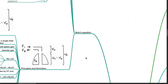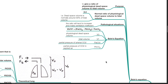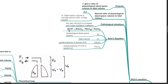The purpose of Bohr's equation is to give a ratio of physiological dead space volume to tidal volume. The normal ratio is 0.3, meaning dead space volume is normally around 30% of tidal volume. In pathological situations, this ratio tends to increase and makes ventilation inefficient. Bohr's equation is given by: Vd / Vt = (PaCO₂ − PeCO₂) / PaCO₂, where Vd equals physiological dead space volume, Vt equals tidal volume, PaCO₂ equals partial pressure of arterial CO₂, and PeCO₂ represents the partial pressure of CO₂ in expired air.